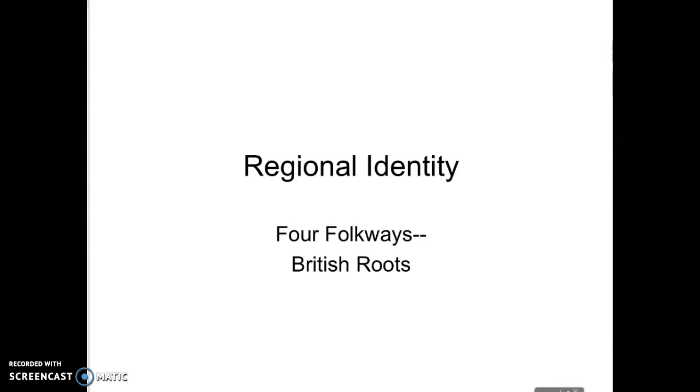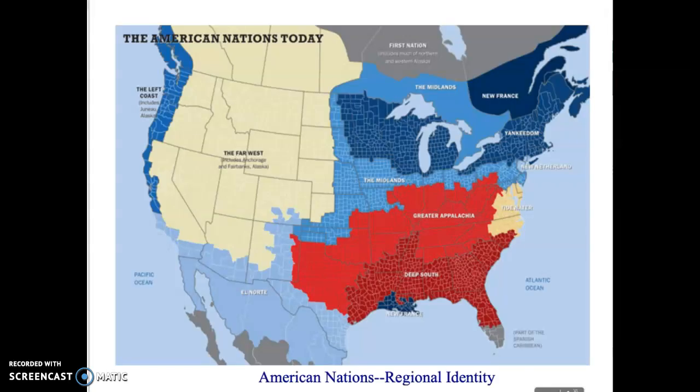And there isn't just one American culture — there are many of them. This map comes from a book called 'American Nations' by Colin Woodard. As David Hackett Fisher also suggests, there are many different nations or cultures within the United States and within the colonies before the United States existed.